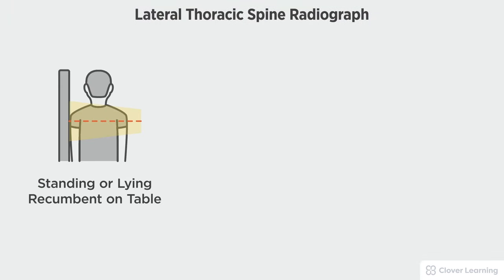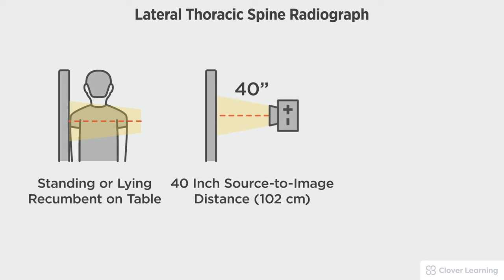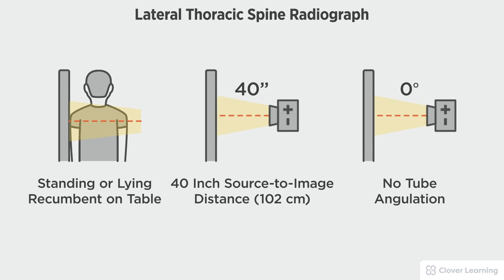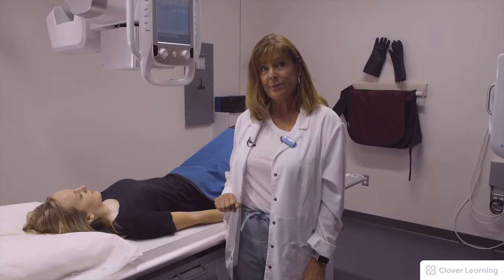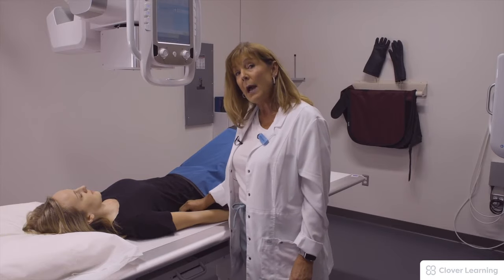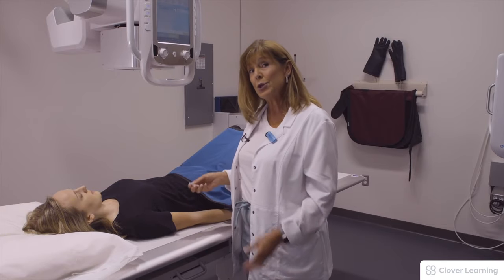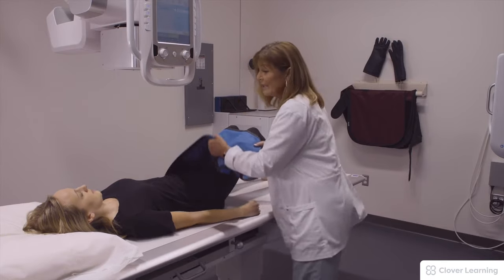In this view we will be demonstrating the lateral thoracic spine. The lateral thoracic spine should be performed with the patient standing at the upright bucky or lying on the table, with a 40-inch source to image distance and no tube angulation. For the lateral, I'm going to have her turn to her left side.